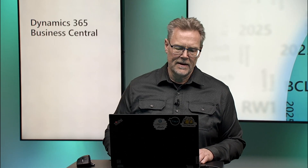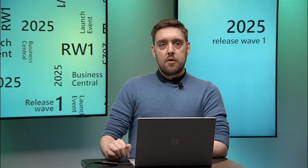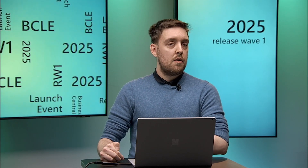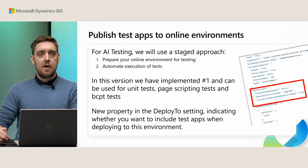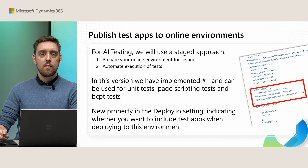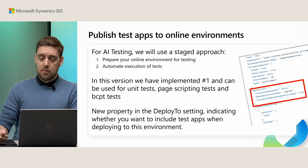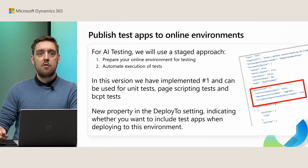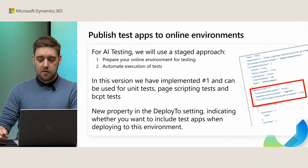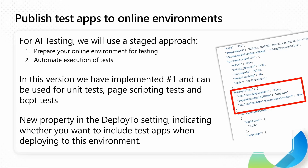The next topic is about including test apps during deployment. We have two features we want to support: number one is deploying test apps, and number two is automatically running tests. For this presentation, we have implemented the first version. All you have to do is prepare your online environment, which should be a sandbox environment, and then enable this feature in AL-Go settings.